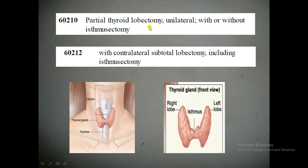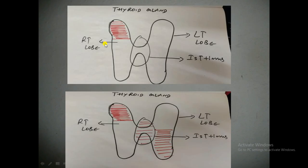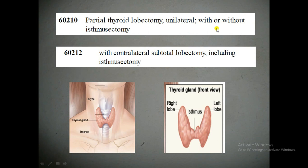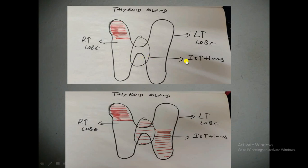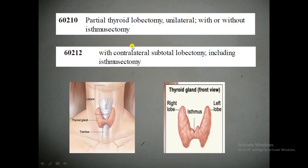For CPT 60210 — partial thyroid lobectomy unilateral with or without isthmectomy — a patient has a nodule in one lobe of the thyroid gland, for example in the upper portion of the right lobe. The physician removes only a part of that lobe. If the nodule is on the right side, he removes part of the right lobe; if on the left side, part of the left lobe. Along with that, he may or may not remove the isthmus. The procedure is performed on one side only — unilateral.